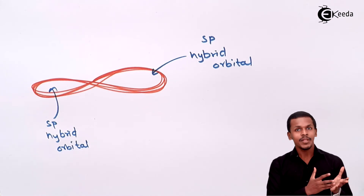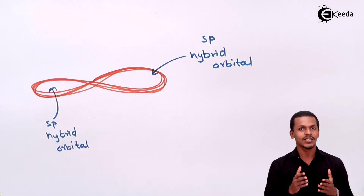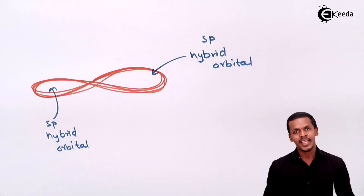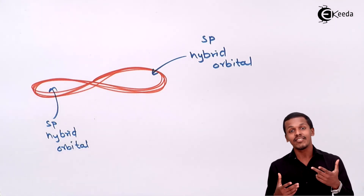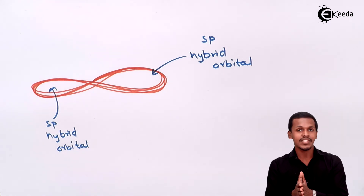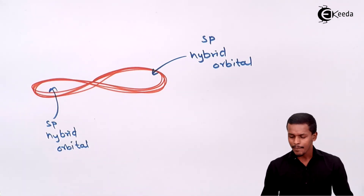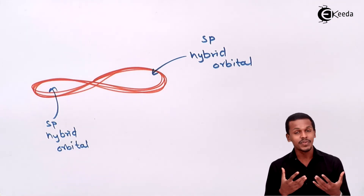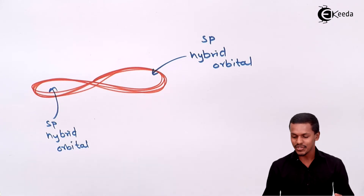In the previous lecture on SP3 hybridization, the s orbital is spherical and p orbitals are along x, y, z axes — dumbbell shaped. When forming SP3 hybrid orbitals, the structure changed from spherical or dumbbell shape to tetrahedral. Similarly in SP2 hybridization, the structure was trigonal planar. Here with SP hybridization, the structure of the SP hybrid orbitals is linear. The unhybrid orbitals are present but are not responsible for determining the geometry.